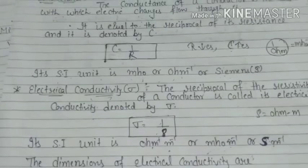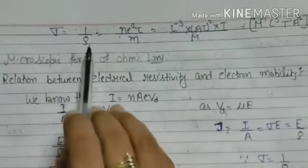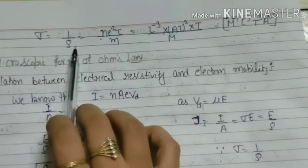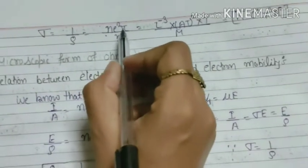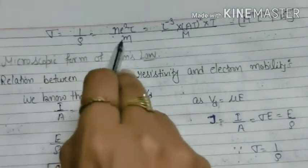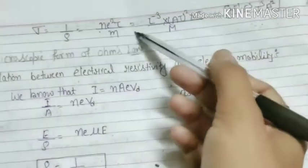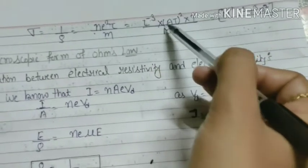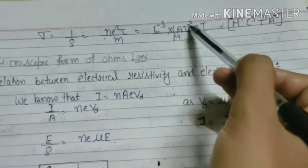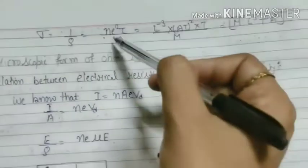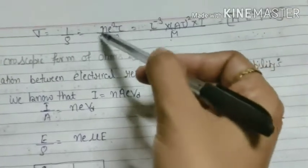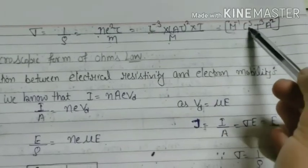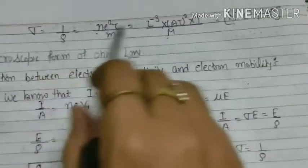Dimensions of electrical conductivity देखते हैं। σ = 1/ρ, और ρ की value है m/(ne²τ) जो हमने mobility वाले topic में discuss की थी। यहाँ n की dimensions हैं L⁻³, charge e की dimensions हैं AT, τ time है T, और m mass है M। तो σ की dimensions बनती हैं: M⁻¹ L⁻³ T³ A²।